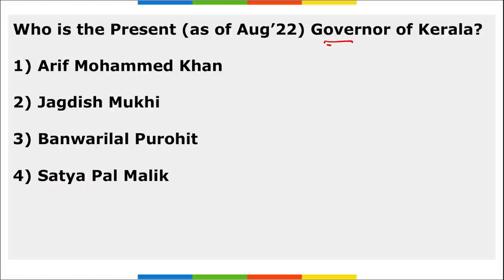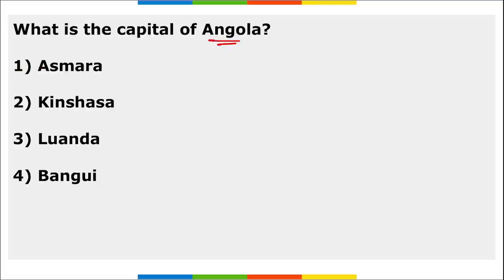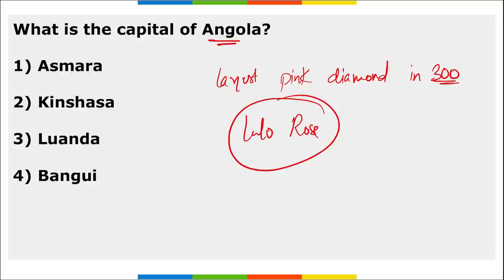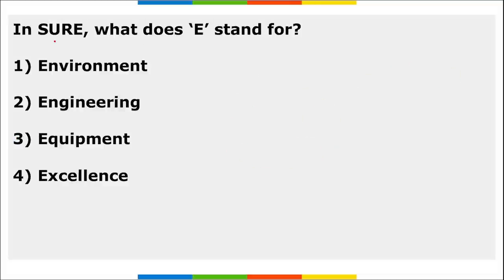Who is the present Governor of Kerala? Arif Mohammad Khan is the present Governor of Kerala. The capital of Angola is Luanda. We are mentioning Angola because the largest pink diamond in 300 years was found there and it was named Lulo Rose.